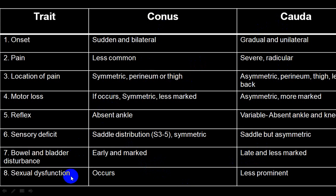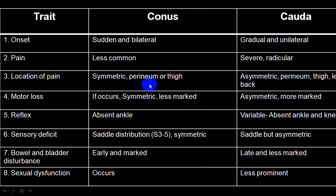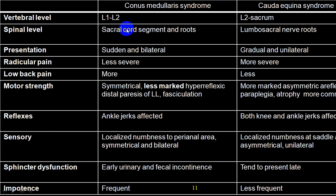Sexual dysfunction — libido and erectile dysfunction — is more common in conus because it also involves the sacral segment, while in cauda equina it is less common. Vertebral level wise, conus is at L1-L2, while cauda equina is after L2 up to the sacrum. Spinal level wise, conus involves sacral cord segments S2, S3, S4 onwards, while cauda equina involves L2 up to coccygeal nerve roots.